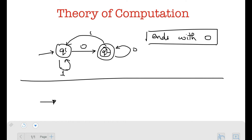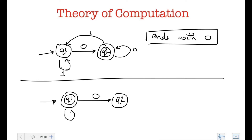Whatever is my final state will now be a non-final state, and whatever isn't my final state will become a final state in my new DFA. So in the complement DFA, Q1 will now also be a final state, and Q2 will no longer be a final state. The arrows remain exactly the same. Let's see if this accepts epsilon — on no input, I'll be at my start state Q1, which is now my final state, so I am accepting epsilon.